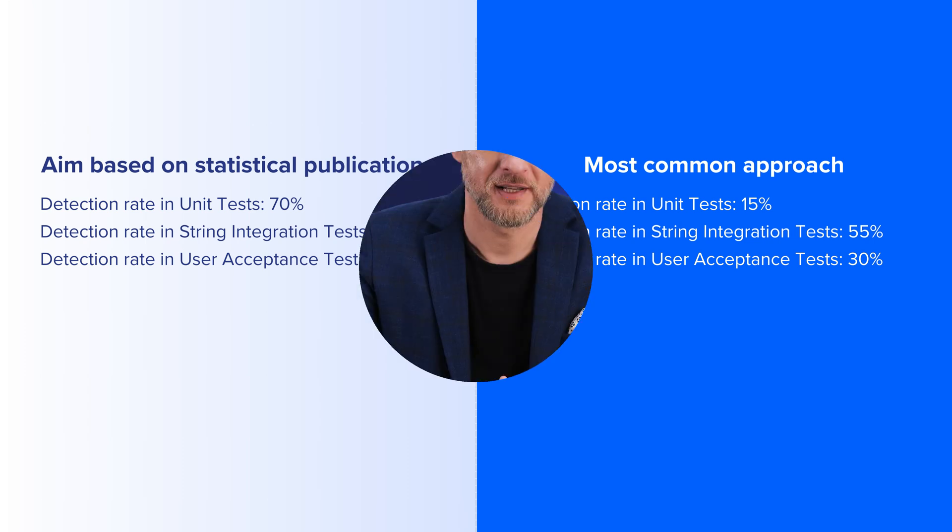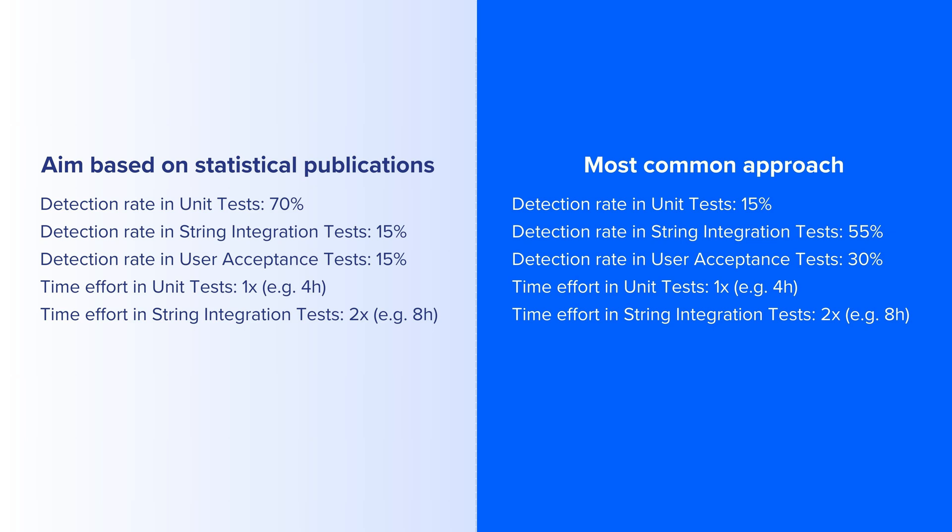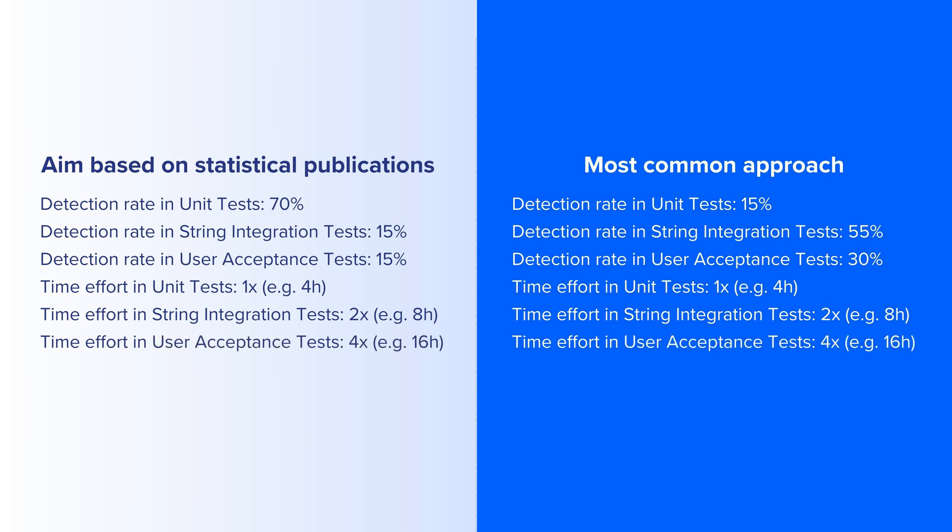Once we realize that, it's easier to see how much could be saved on early defect detection. Let's now look at the work effort it takes to resolve a defect. A rather conservative approach assumes that defect resolution time will double each phase of the project — so if we start with 4 hours during unit testing, we will have 8 hours in string integration testing, and 16 hours during user acceptance tests.